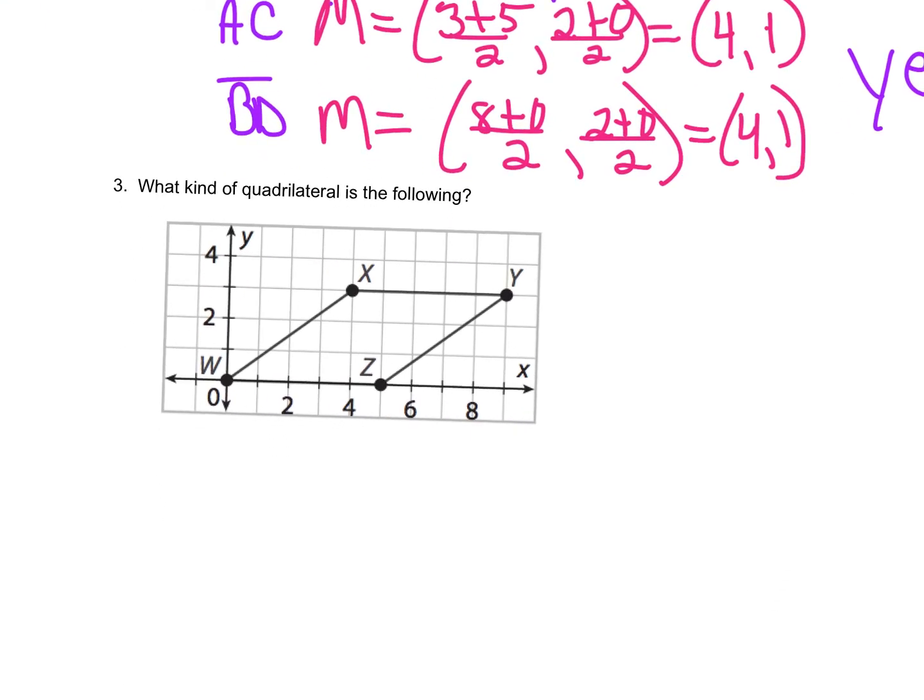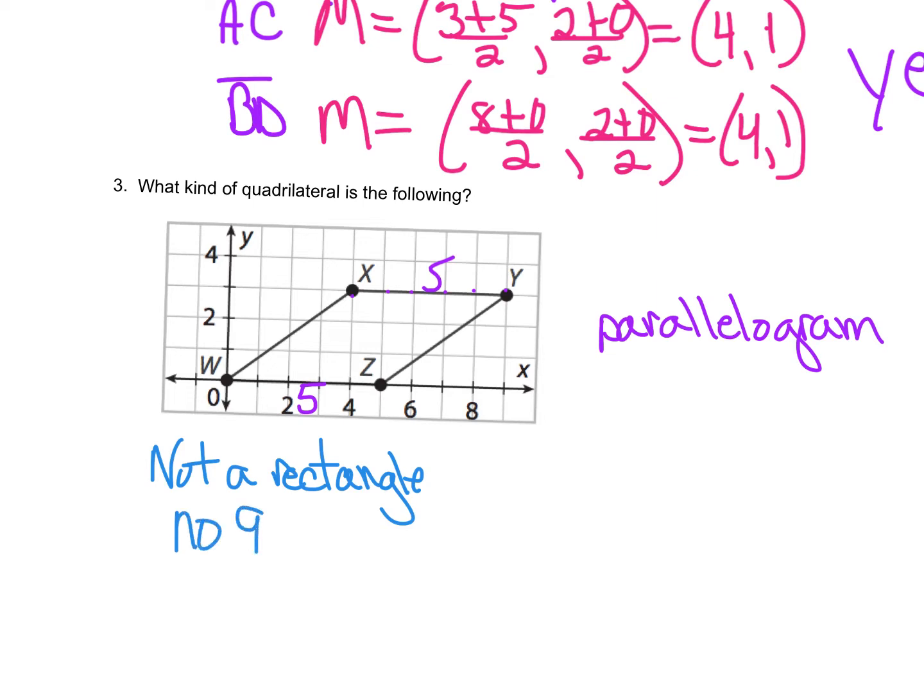Well, the easiest thing to do is say, 1, 2, 3, 4, 5. That's 5 and that's 5. And I can see that they're parallel. So I know that it's at least a parallelogram. But let's check the length, because it could be a rhombus. I know it's not. And let me write this, not a rectangle. No 90 degree angles, right? No right angles.